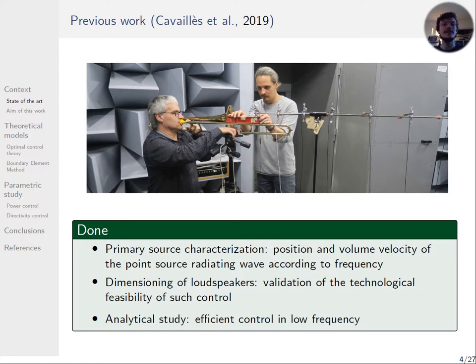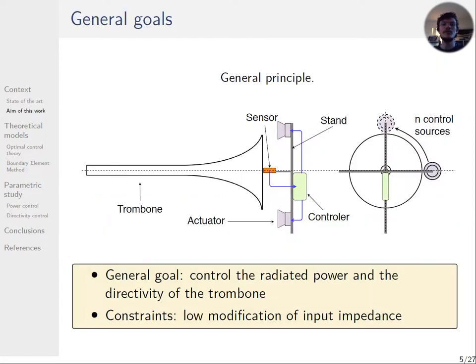Last year an experiment showed that the position of the point source radiated by the trombone depends on the intensity and the frequency of the note. But the main result is that an external control is efficient only in low frequency. The critical parameter of the efficiency over the frequency is the distance between the primary source and the control source. So my work consists of designing an active mute that controls in the best way the radiated power or the directivity of the trombone.